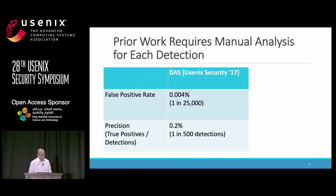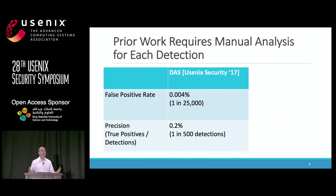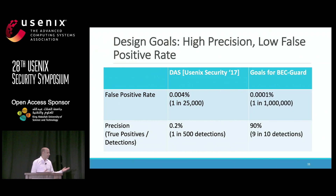There has been some prior work from academia — from Grant and collaborators at USENIX Security two years ago — that tried to stop this type of attack with a detector using an unsupervised learning model. They did a good job and catch the vast majority of attacks, but they have very high false positive rates. They assumed the organization using their system has a group of security analysts who can sift through the results and quarantine emails.